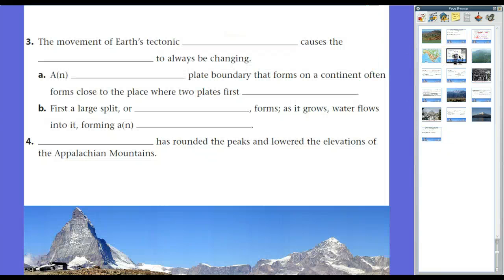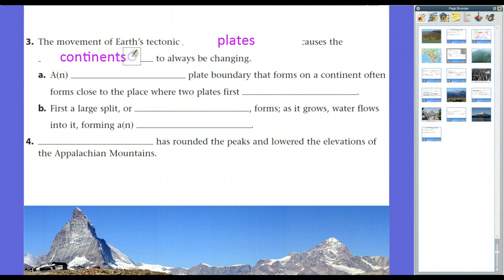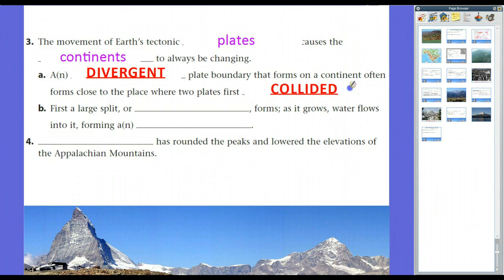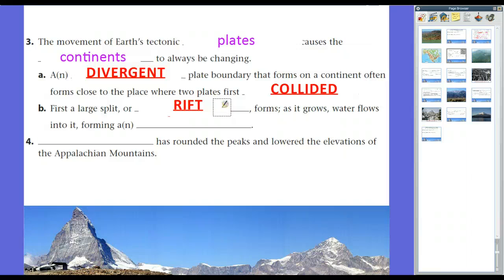Once these forces stop, the movement of Earth's tectonic plates caused the continents to always be changing — they'll shift and move, but sooner or later they will stop. A divergent plate boundary forms when a continent splits close to the place where the two plates first collided. The St. Lawrence River Valley in Canada and the Mississippi River Valley are examples. The most common example today is the Great Rift Valley in Africa, where Africa is being pulled into two pieces. Over tens of millions of years, eventually Africa will split in half and water will fill in, forming an ocean.